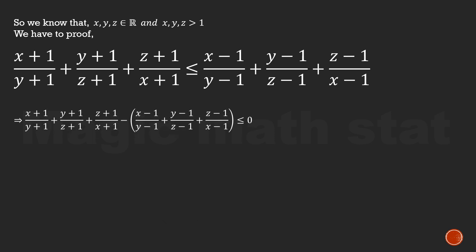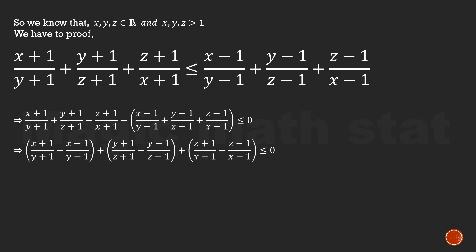First, let's take everything to the left-hand side, then pair those similar-looking terms together. So we have (x+1)/(y+1) minus (x-1)/(y-1), plus (y+1)/(z+1) minus (y-1)/(z-1), plus (z+1)/(x+1) minus (z-1)/(x-1). The whole expression is less than or equal to 0.